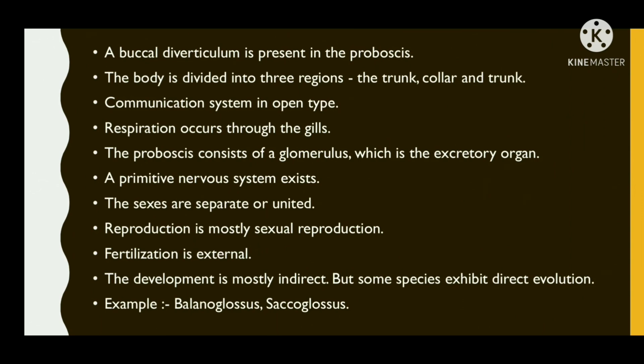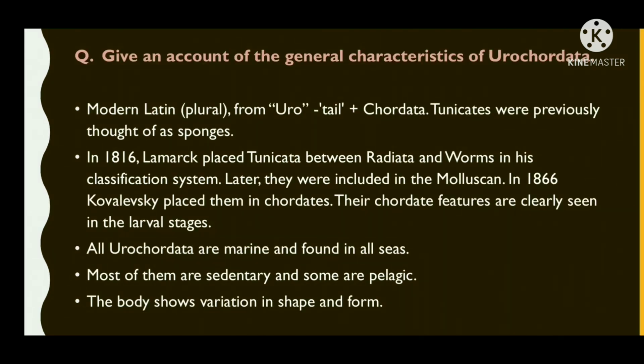Respiration occurs through the gills. The proboscis consists of a glomerulus, which is the excretory organ. A primitive nervous system exists. The sexes are separate or united. Reproduction is mostly sexual; fertilization is external. Development is mostly indirect, but some species exhibit direct development. Examples are Melanoglossus and Saccoglossus.